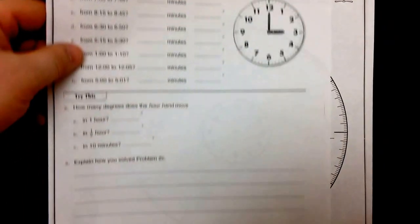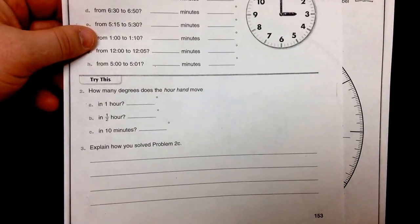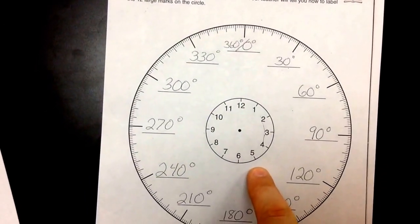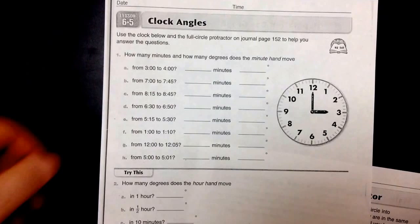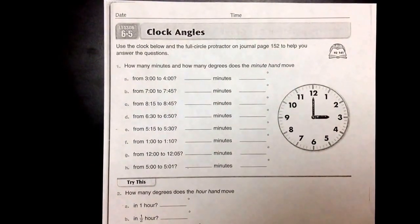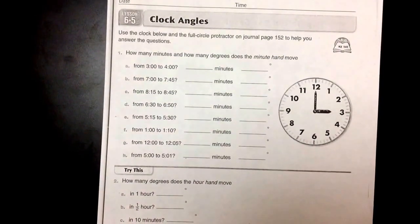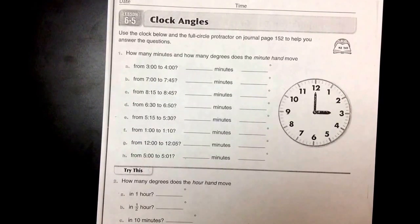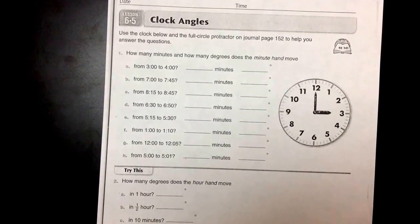Looking at your next page, page 153, we're going to use this to help us complete this page. So using the clock that we have on page 152 with the full circle protractor, we're going to try to answer these questions.